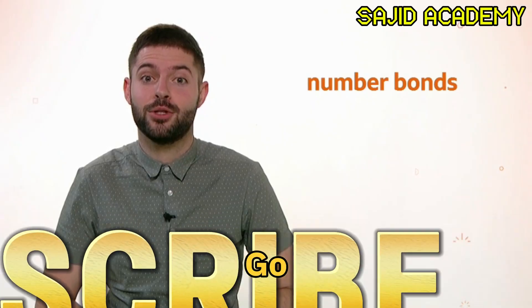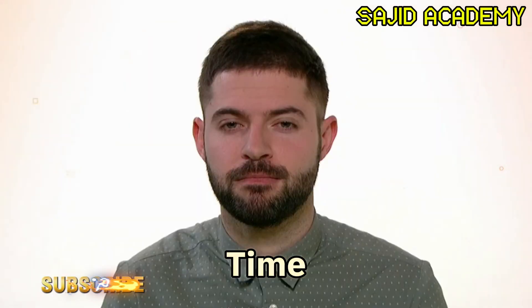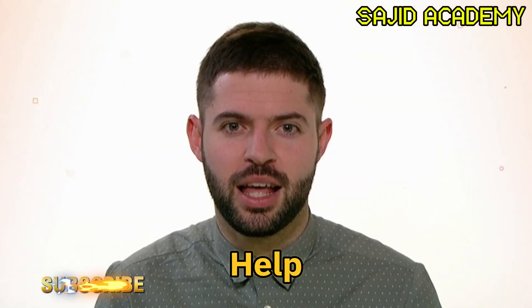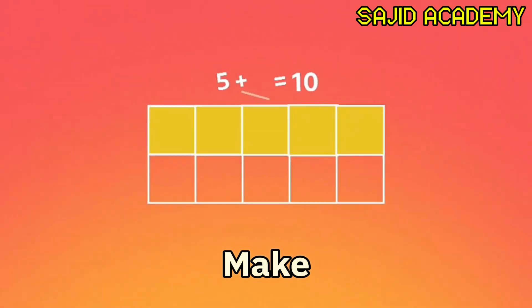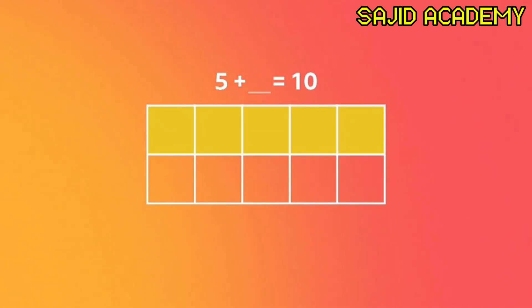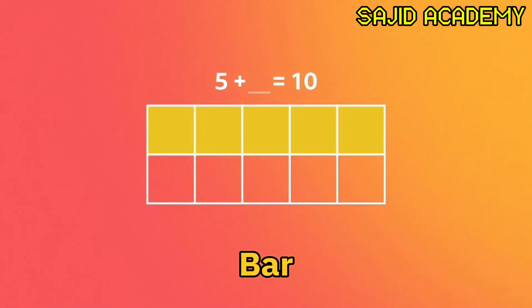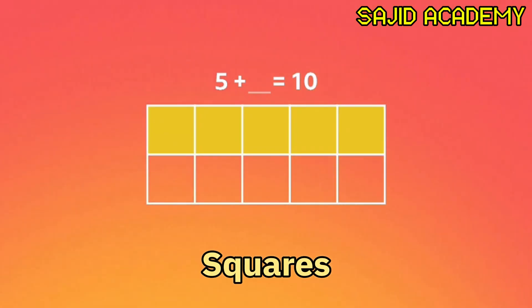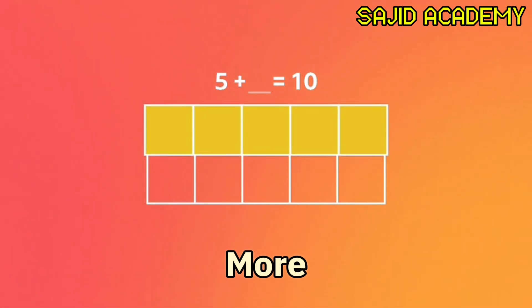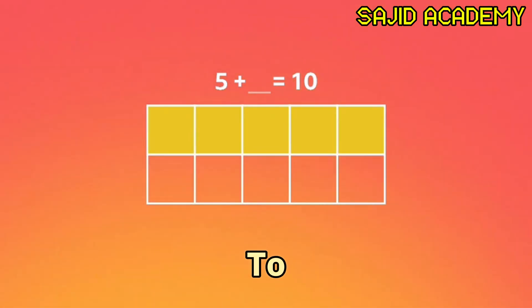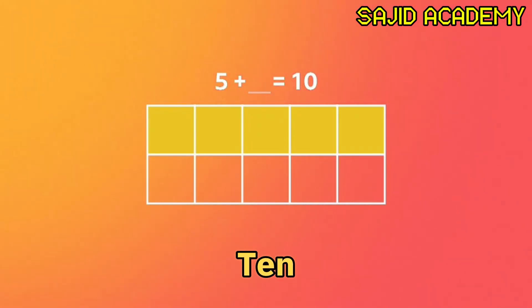Let's have a go. This time we're going to use a bar to help us. What do I add to five to make ten? Let's look at this bar. Five out of the ten squares have been coloured in. So how many more do we need to be coloured in to make ten?